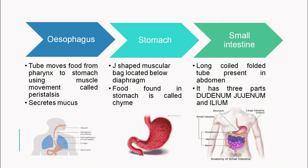After the esophagus, the food — now called a bolus — passes on to the stomach, a J-shaped muscular sac located below the diaphragm. Food found in the stomach is known as chyme. As long as the food was in the esophagus it was a bolus, and once it moves into the stomach and the action of certain enzymes occurs, it changes into chyme.